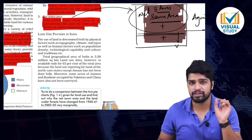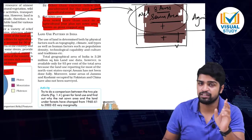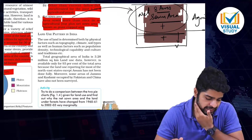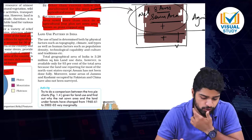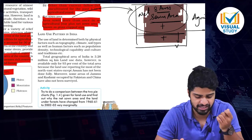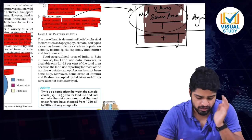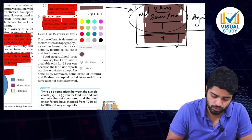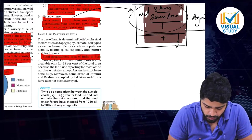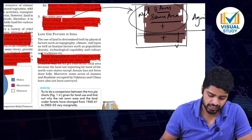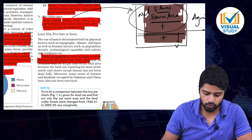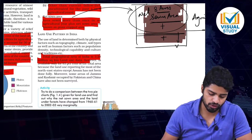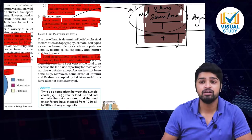Land use pattern in India: the use of land is determined both by physical factors such as topography, climate, soil types, as well as human factors like population density, ecological capability and culture. Total geographic area of land is 3.28 million square kilometers. Land use data is available only for 93% of the total area because land use reporting for most northeast states except Assam has not been done fully, and some areas of Jammu and Kashmir occupied by Pakistan and China have also not been surveyed.